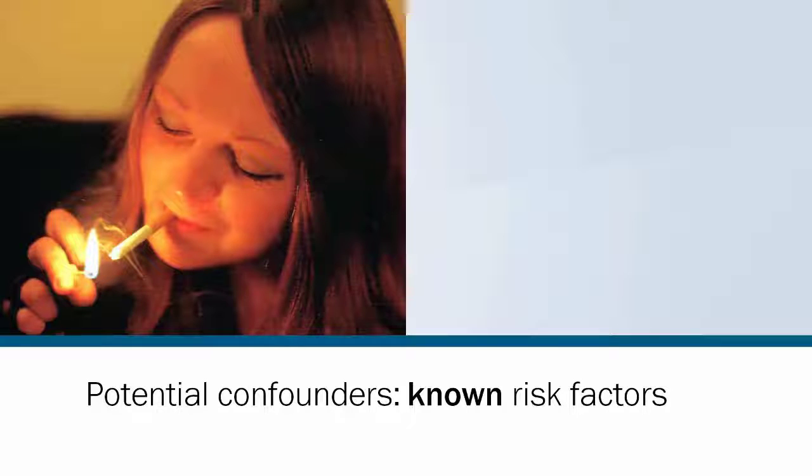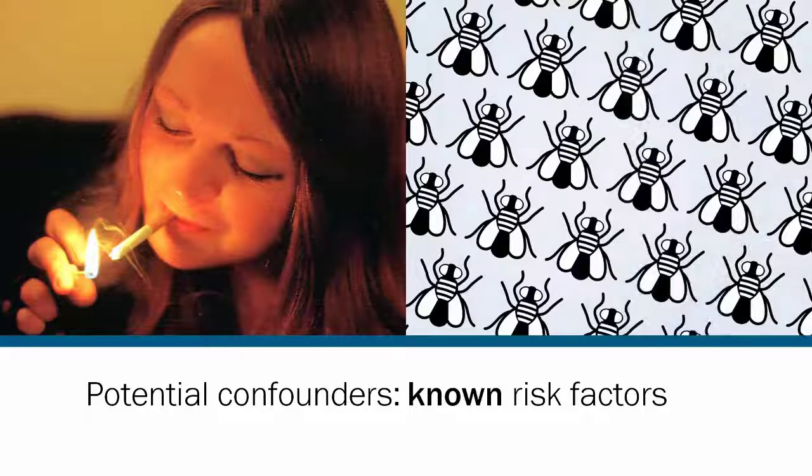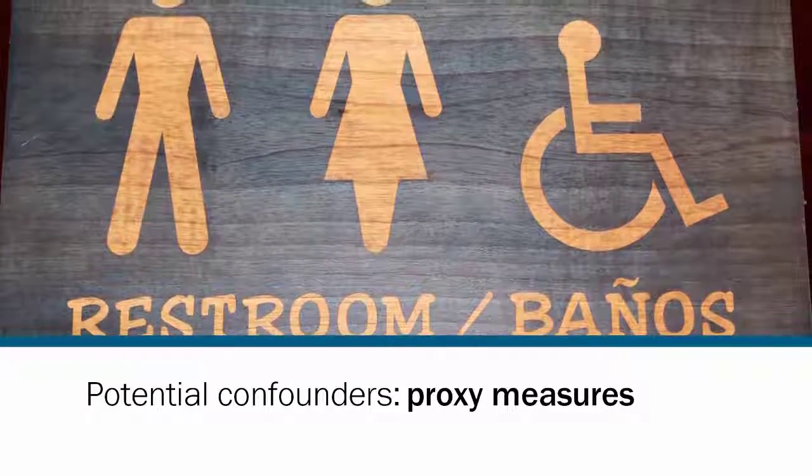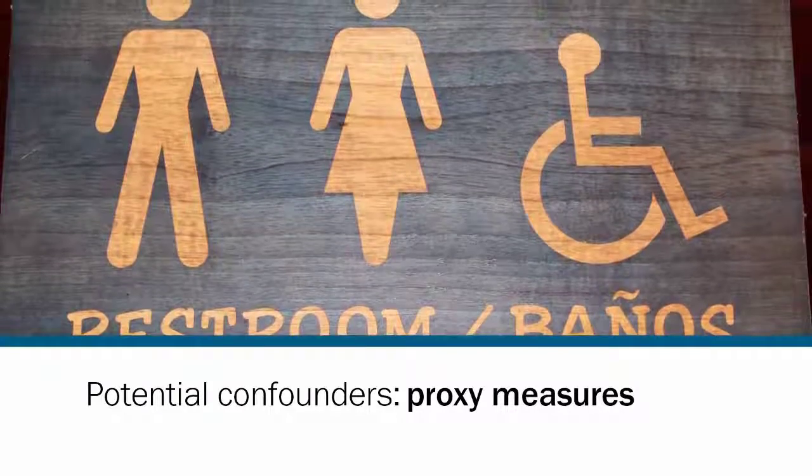Potential confounders include factors that are known risk factors for the disease such as smoking and AMD, or a high density of muscasorbens flies and trachoma, and factors that are proxy measures for risk factors, for example, having an indoor toilet and socio-economic status.